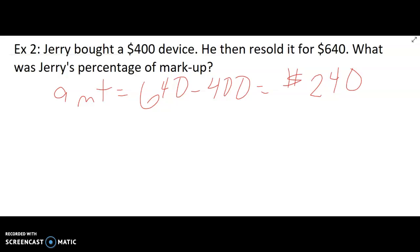Now that doesn't answer the question. The question was percentage. So let's go back to the equation that said the amount of markup is the original cost or the purchase price times the rate. The rate is what we're trying to find. So if we plug in what we know, we know the markup amount was $240. I know the original amount, the purchase price was $400. And we're trying to find the rate.